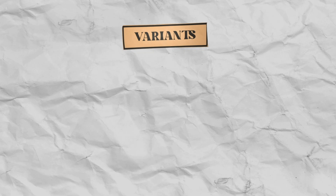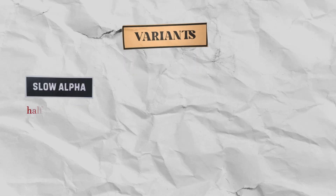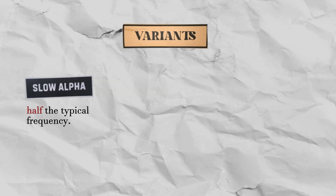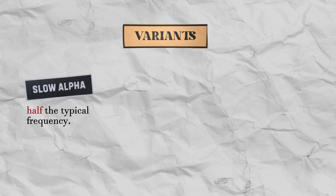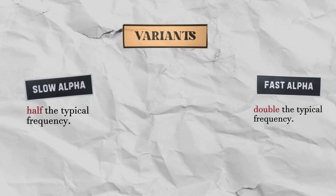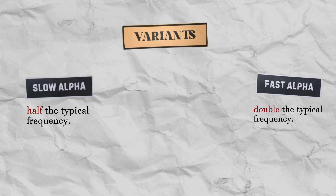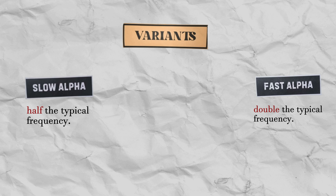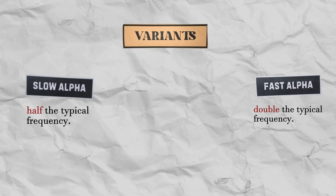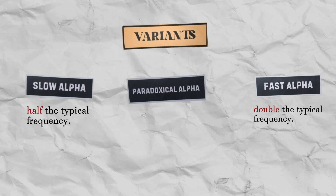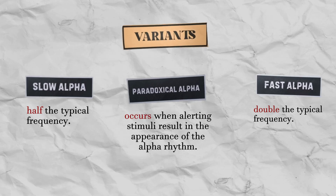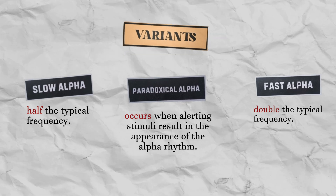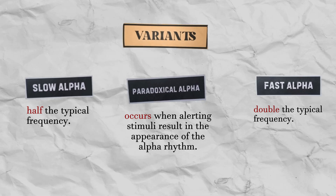Variants of the alpha rhythm include forms that are either half the typical frequency, deemed slow alpha, or double the typical frequency, deemed fast alpha. Yet they share similar distribution and reactivity patterns, and both are considered normal. Occasionally, the alpha rhythm may display a notched appearance. Another variation known as paradoxical alpha occurs when alerting stimuli result in the appearance of the alpha rhythm, whereas drowsiness does not. This is an unusual pattern that can provide additional insights into the individual's state of brain activity.